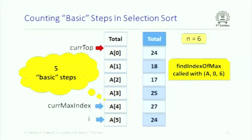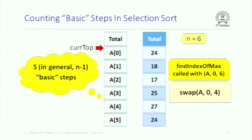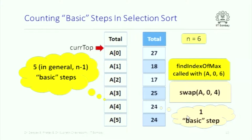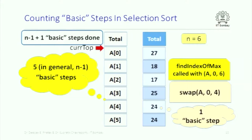We used five basic steps, and in general if the array is of size n, we start from the zeroth element and have n-1 subsequent steps. So in general n-1 comparisons. After that we swap this element, which we found to be the maximum, with current_top. That swap also involves reading an element, copying it, and writing — a fixed number of computational steps — so we count it as one basic step. Totally we have used n-1+1 basic steps so far. This is one iteration of the selection sort loop when current_top was 0.